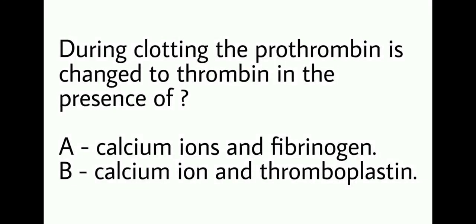Question 1. During clotting, the prothrombin is changed to thrombin in the presence of — options are: A) calcium ions and fibrinogen, or B) calcium ion and thromboplastin. Option B is correct. Prothrombin is changed to thrombin in the presence of calcium ion and thromboplastin.